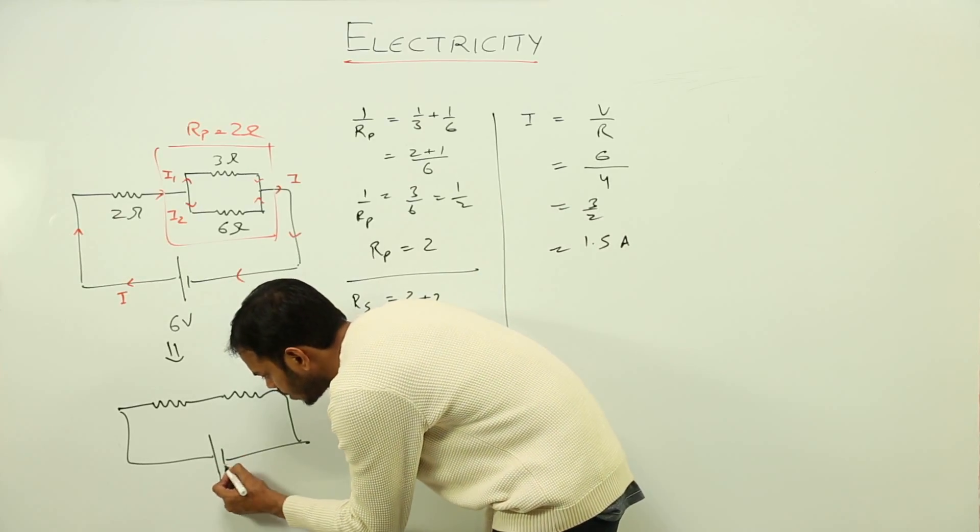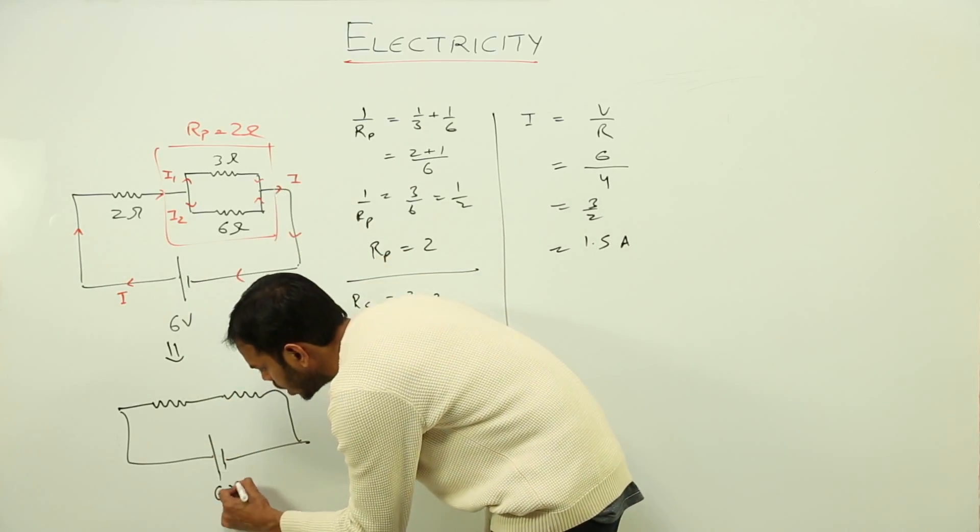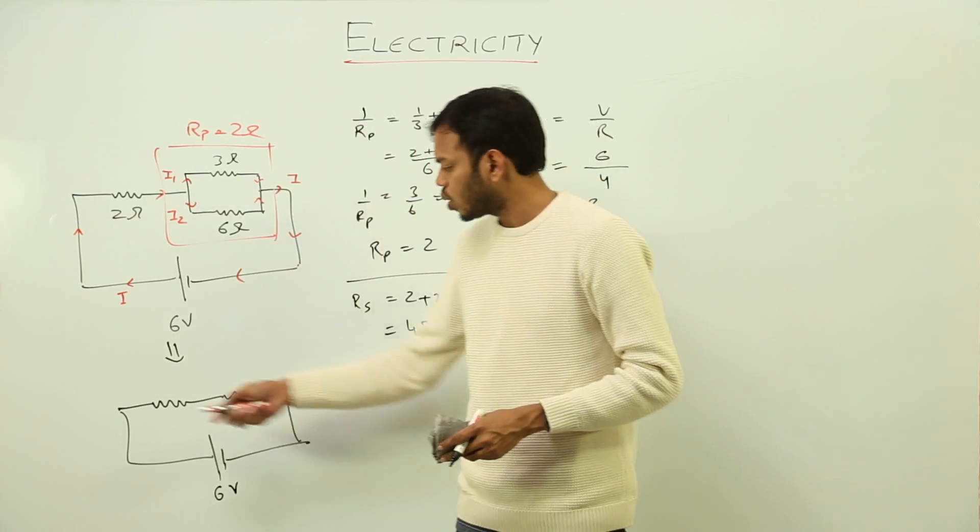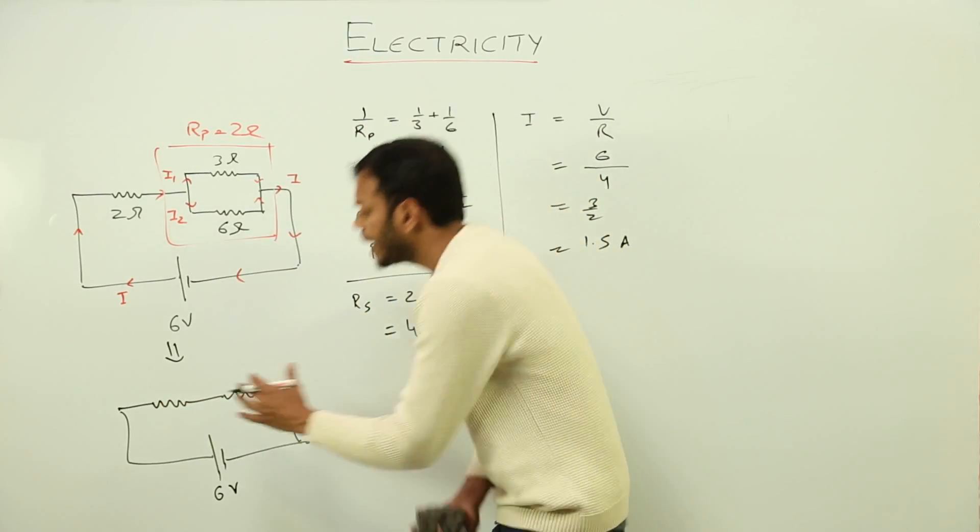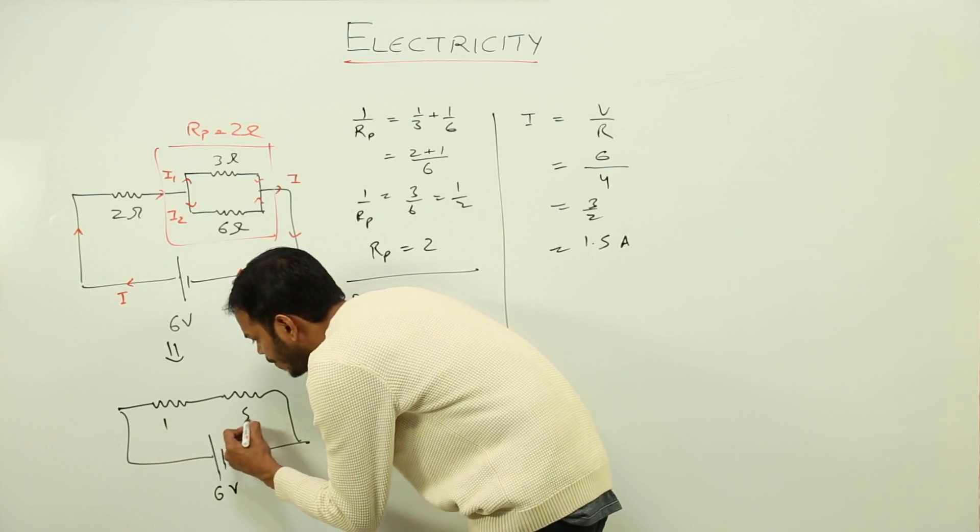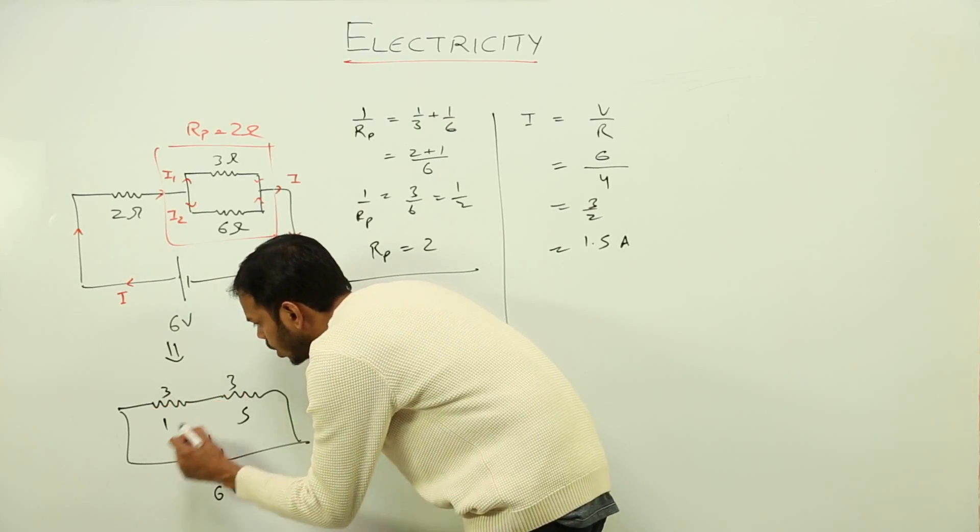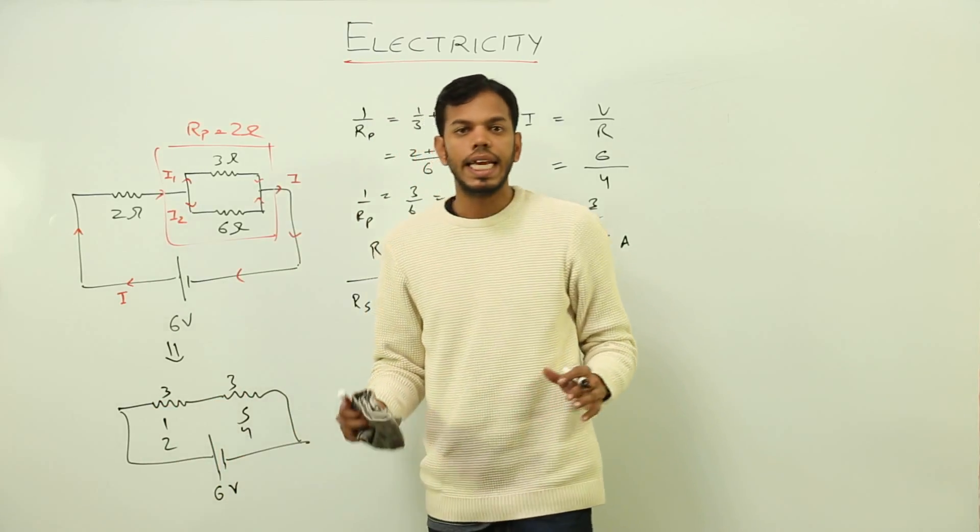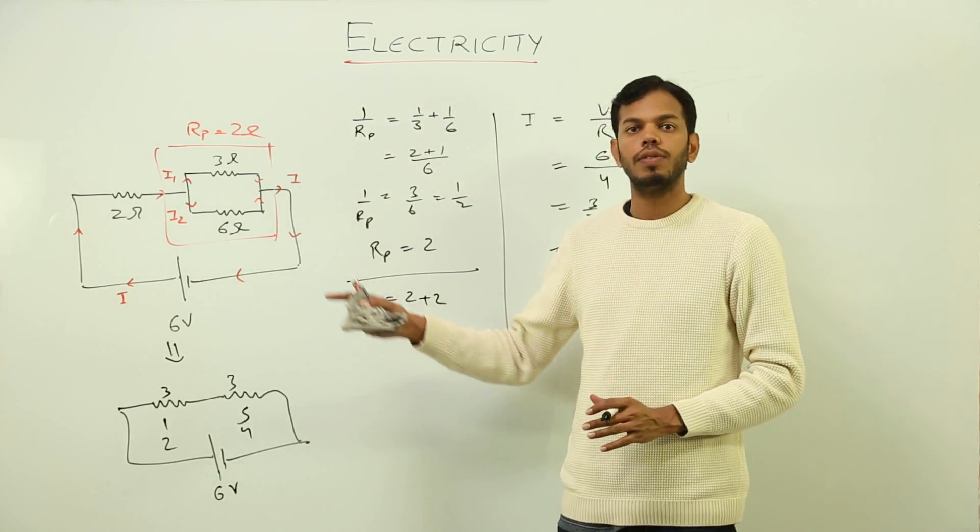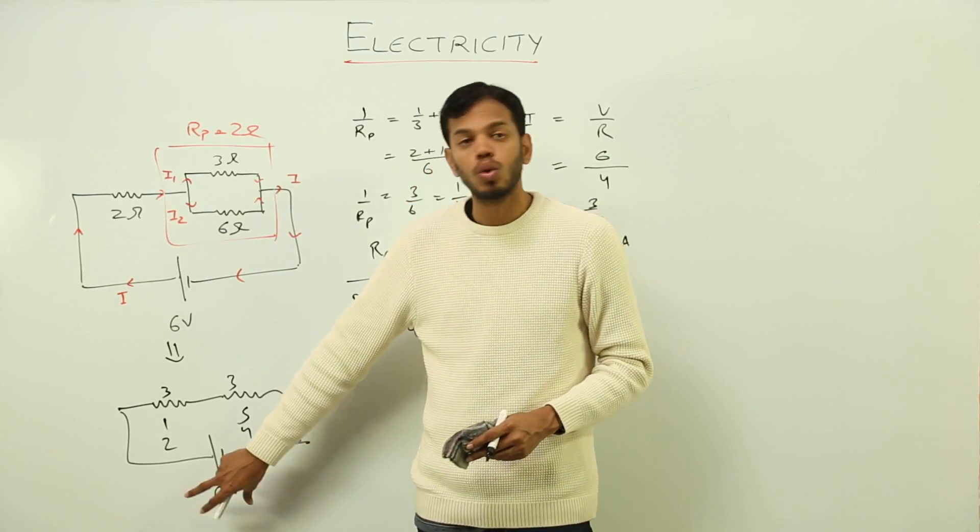As I told you in series and parallel combination, whatever voltage has been applied here, we have applied 6 volts. So this 6 volts is going to get consumed throughout the circuit. That means this might have taken 1, this might have taken 5, or 3 and 3, or 2 and 4.